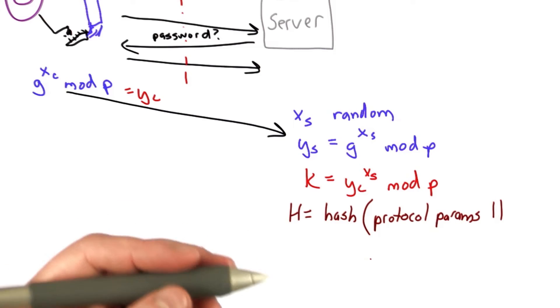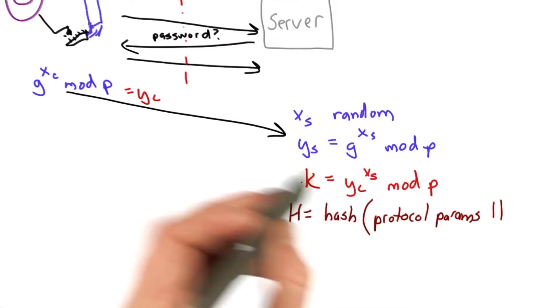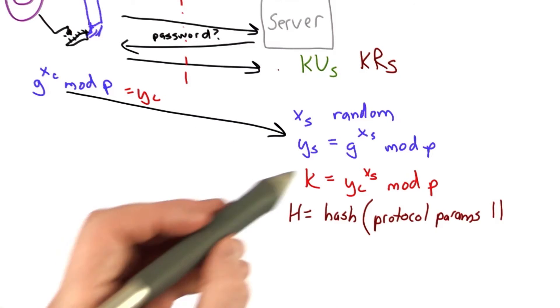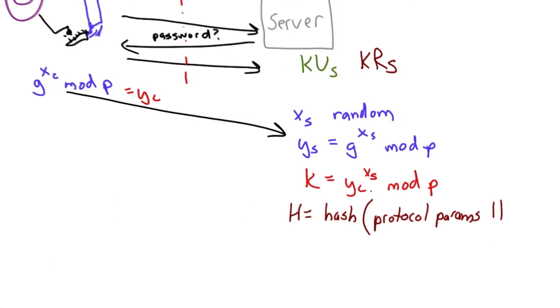Those will be concatenated with the public key of the server. We're assuming at the start of the protocol the server has some public-private key pair. And so what will be included in this hash is that public key, public key of the server.